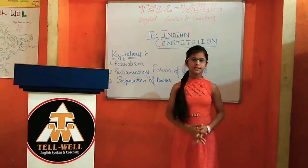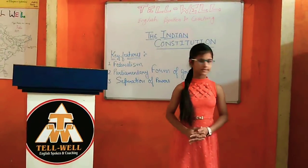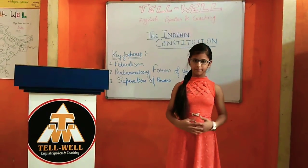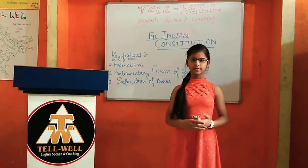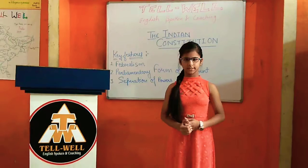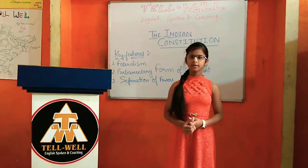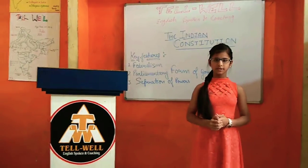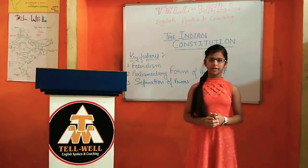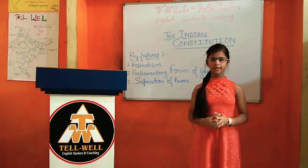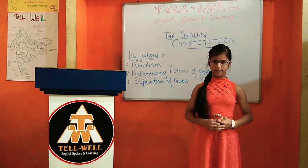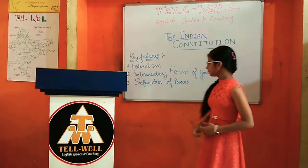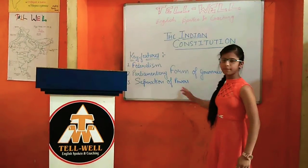First, federalism — this means the existence of people that are electing representatives. Second, parliamentary form of government — this means that the people have a direct role in electing their representatives. Third, separation of powers.